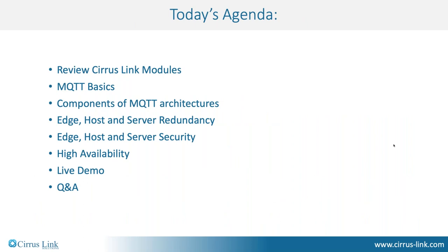In this hour we'll start with a brief review of the CirrusLink modules and where they fit into a system architecture, then move on to a review of MQTT basics. We'll look at typical architectures to show how this works in real-world applications and explain how to set up an MQTT architecture that is secure, has redundancy, and is highly available using our MQTT modules for the Ignition platform and our standalone MQTT server Chariot. We'll have a live demo showing how simple it is to set up and configure the MQTT environment, see the reliability during a failover caused by a simulated catastrophic failure, and see how quickly the system self-heals and recovers. At the end we'll wrap up with a Q&A session.